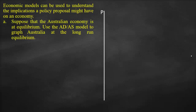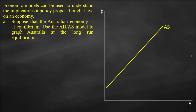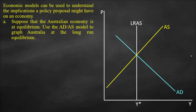We'll start by drawing our y-axis, which is the price, and our x-axis, which is output. Then we'll draw our upward-sloping short-run aggregate supply curve, our downward-sloping aggregate demand curve, and our long-run aggregate supply curve. All three curves intersect at the same point, which we label as point A, giving us our potential output — also called full employment output — and price level P1.